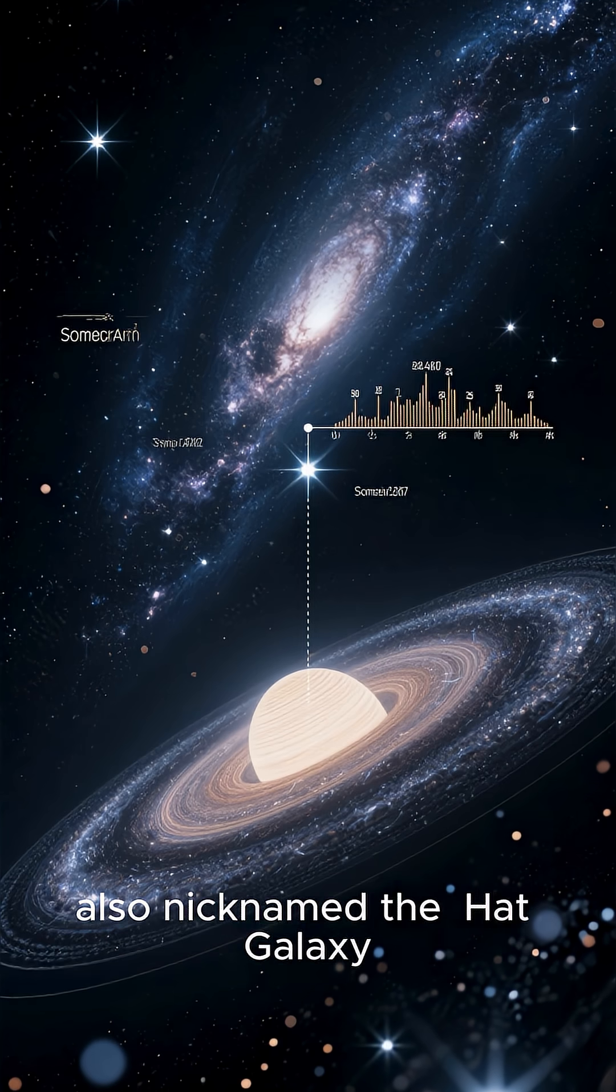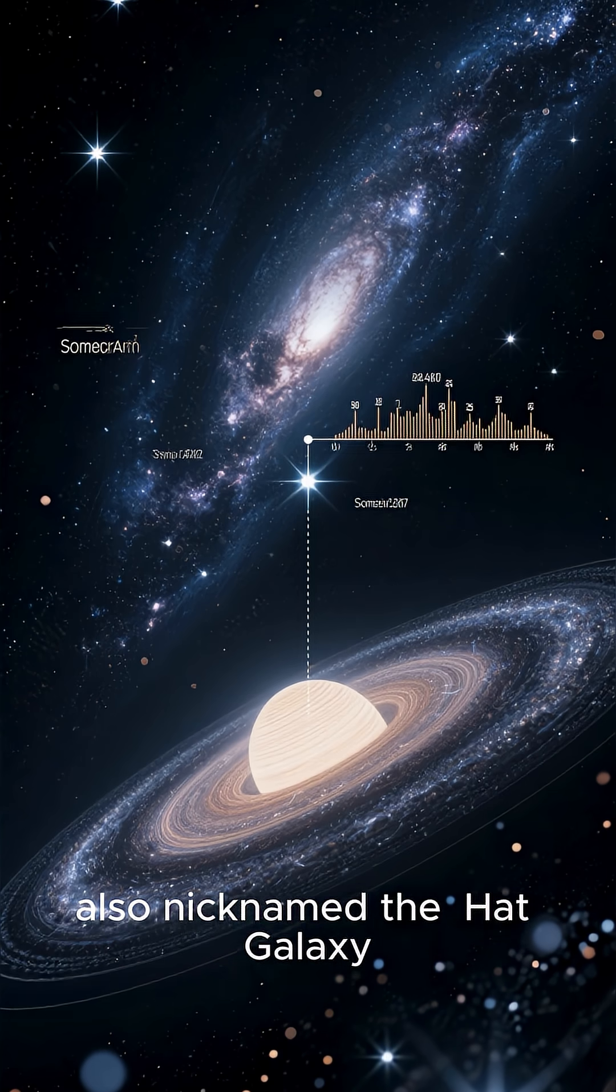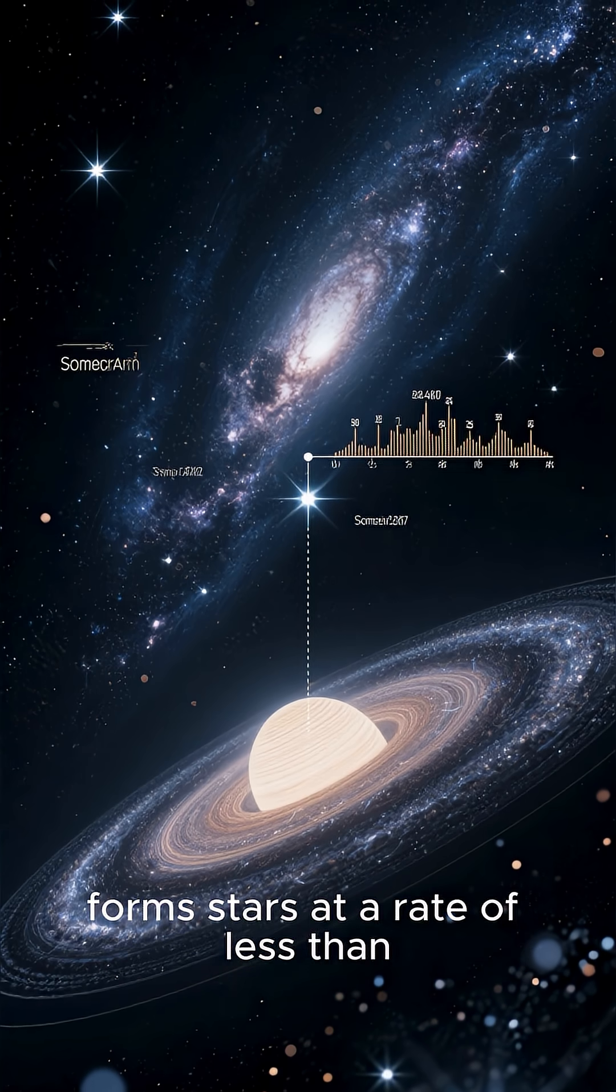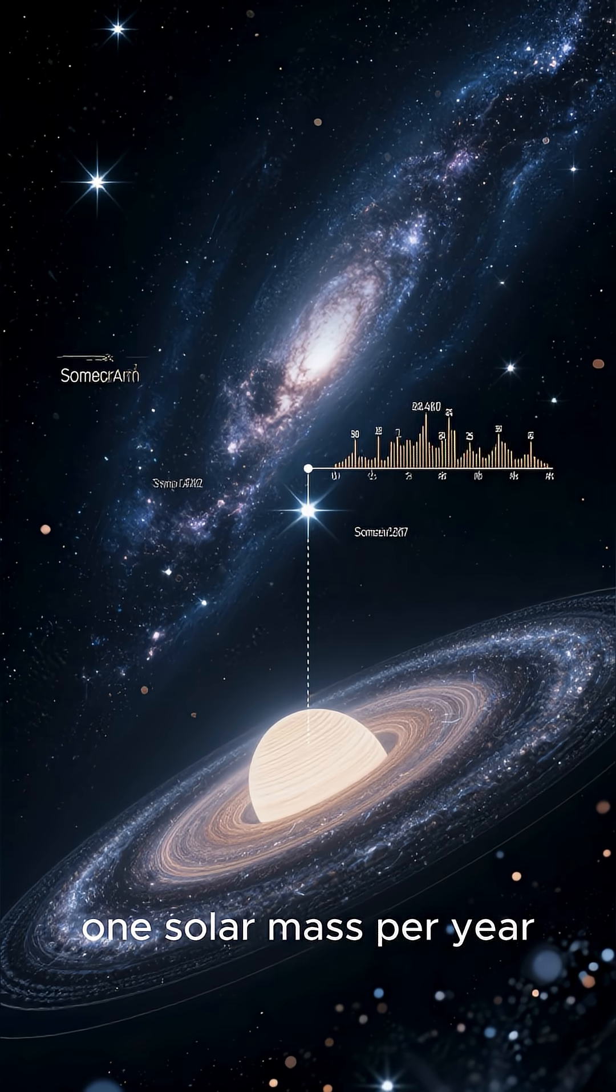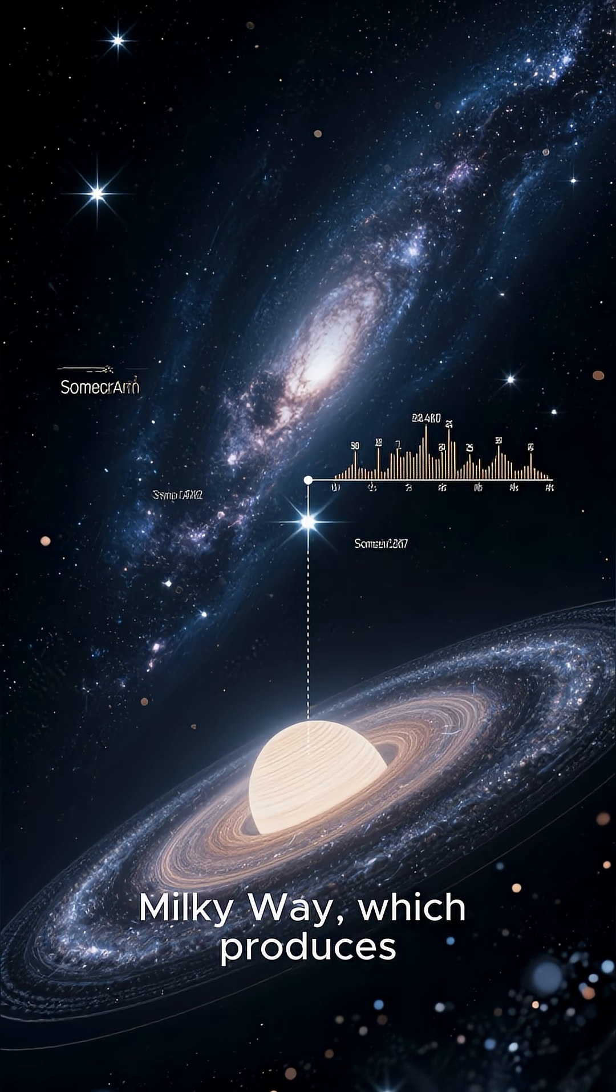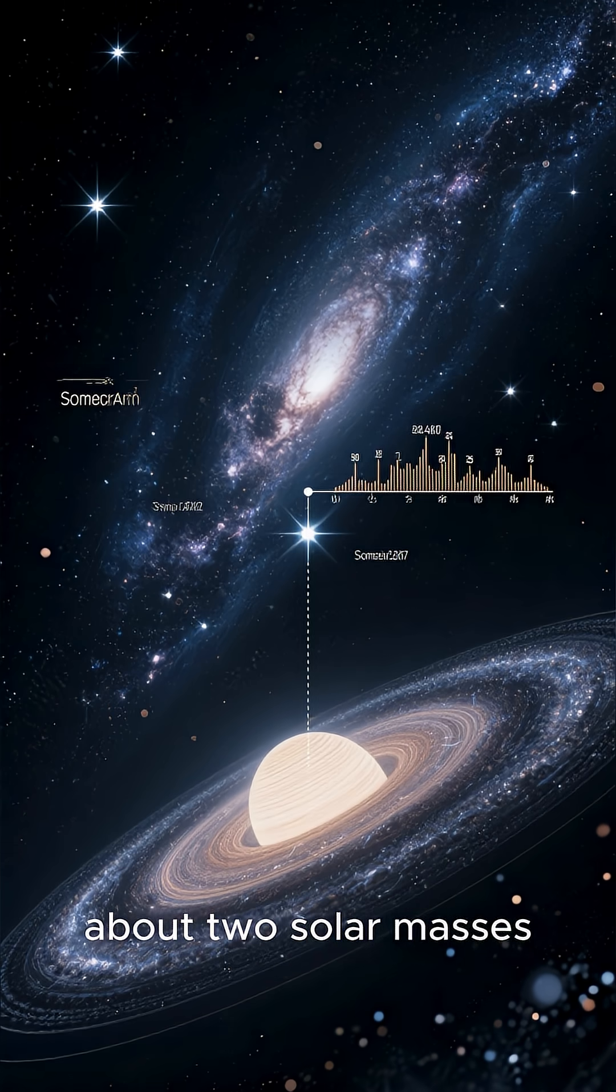The Sombrero Galaxy, also nicknamed the Hat Galaxy due to its distinct shape, forms stars at a rate of less than one solar mass per year, far lower than our own Milky Way, which produces about two solar masses annually.